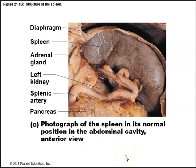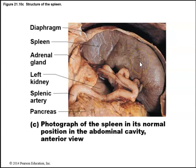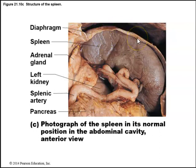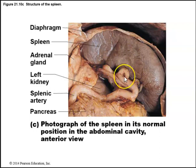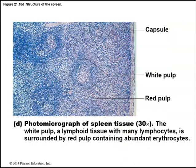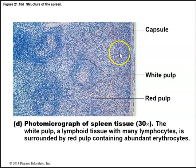Here is a gross view of the spleen. It kind of looks like the kidney, and many students confuse the two, but they are distinct structures. The spleen is located near the left kidney, and above the left kidney we have the adrenal gland. The spleen pushes up against the diaphragm, which separates the thoracic cavity from the abdominal cavity. The splenic artery goes along the superior border of the pancreas, giving blood supply to the spleen through the splenic hilum. A histoslide shows white pulp surrounded by red pulp and the fibrous capsule.